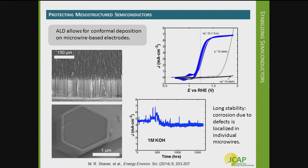These microwires are quite a bit more stable when protected than a planar substrate. We think this is because the structured array allows each microwire to act as an individual electrode in a sense. If there are defects or pinholes in the protective film, a single microwire's electronic properties might be damaged, but the rest of the microwires are still there and can behave with good performance. So structuring a substrate in this way has benefits for long-term stability.